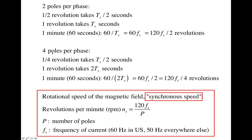For the four-pole per phase system, one quarter revolution takes half a period, so one revolution takes two periods. Within 60 seconds, the number of revolutions equals 60 ÷ (2 × Ts) = 60 × Fs ÷ 2, which can be rewritten as 120 × Fs ÷ 4, where the 4 is the number of poles per phase.